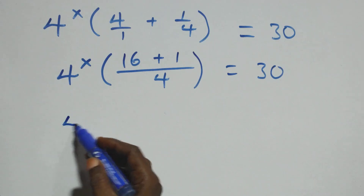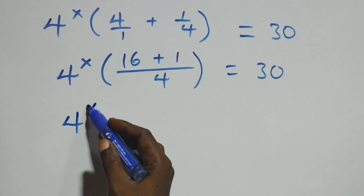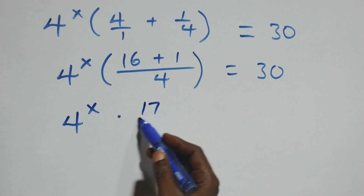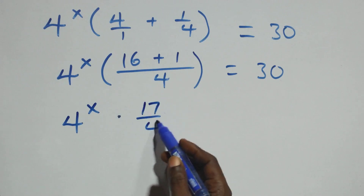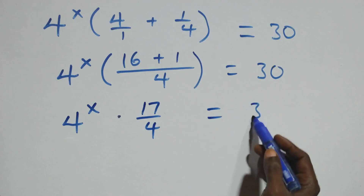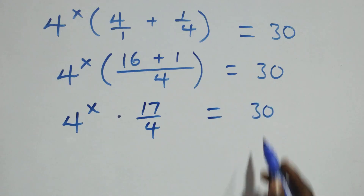This becomes 4^x times (16 + 1), that is 17, then over 4, equals 30 on this side.